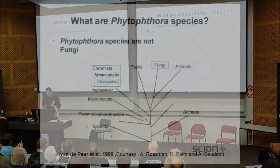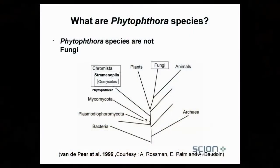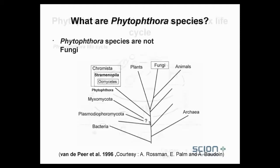What are phytophthora species taxonomically? Phytophthora species are not fungi. They're in the kingdom Chromista, and we commonly refer to them within the Oomycete group.